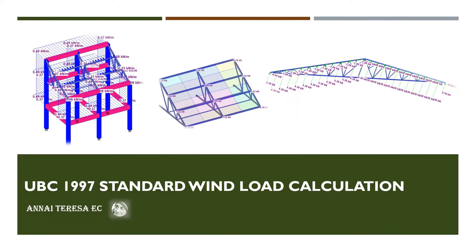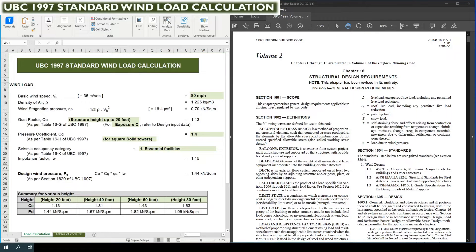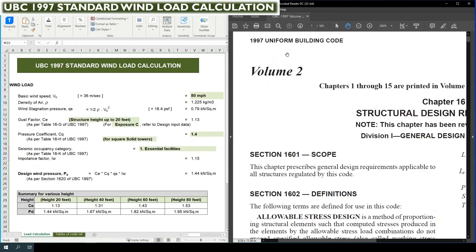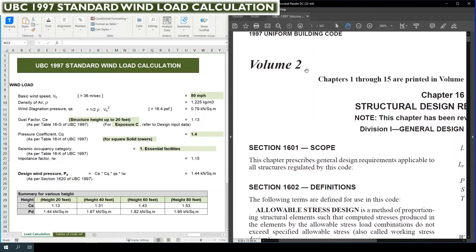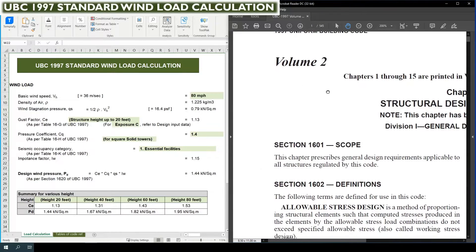Welcome to our YouTube channel. In this video we are going to do wind load calculation based upon UBC standard. On the right hand side you can see a PDF file which is the Uniform Building Code 1997. This is the code we are going to use to calculate wind load.